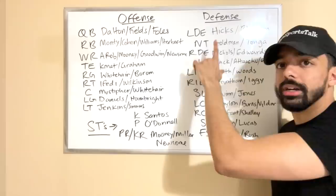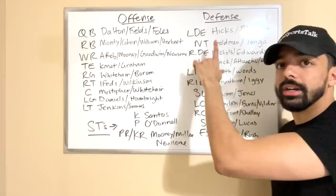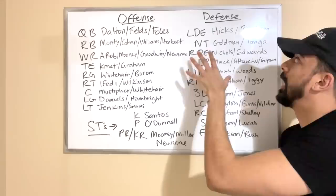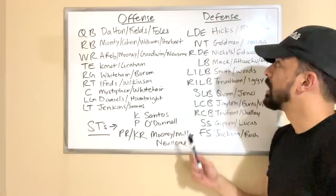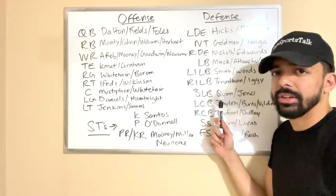Moving over to defense. Defensive end: Akiem Hicks, with Bilal Nichols behind him. Nose tackle: Eddie Goldman is coming back, which is great, with Khyiris Tonga the rookie we drafted this year as depth behind him. The other defensive end on the right side: Mario Edwards was a surprise free agent pickup for us.